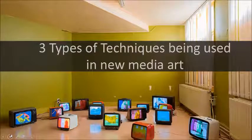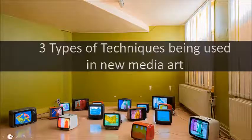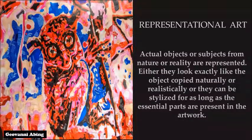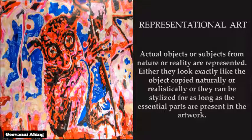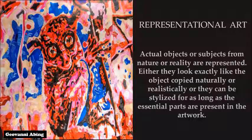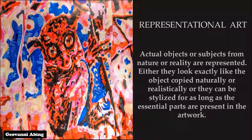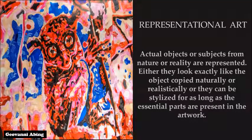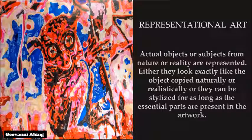There are three types of techniques used in new media art. First, we have representational art. Here, actual objects or subjects from nature or reality are represented. It is a type of art in which we represent something, whether that be a tree in a landscape, an apple in a still life, or a figure in a portrait. In other words, it is art which is clearly identifiable as something that already exists in our life, describing artworks particularly focusing on paintings and sculpture.